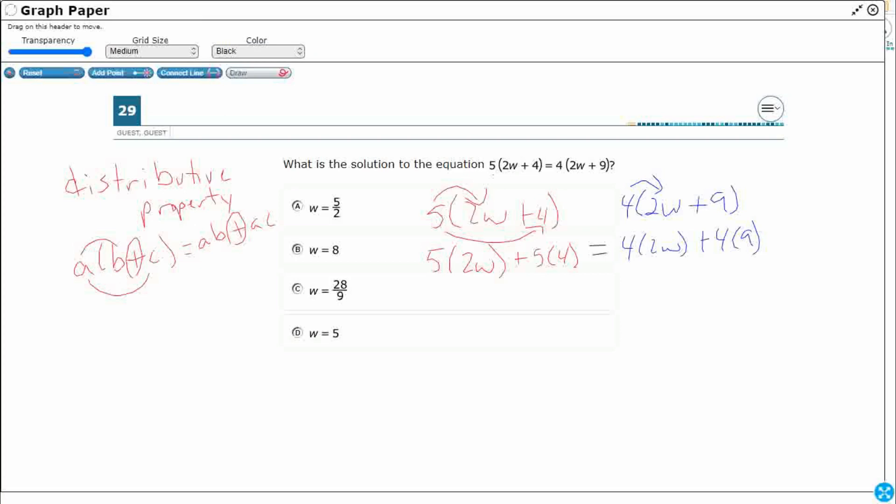So 5 times 2W is going to be 10W. You're just multiplying the whole numbers. 5 times 4 is 20. 4 times 2W is 8W. And then 4 times 9 is 36. Okay, so that's much simpler.